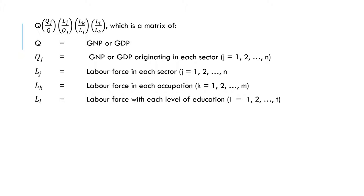Now let's look at the formula that goes with this method. This method sums up by multiplying the fractions of the GNP or GDP derived in the various sectors by the labor output coefficient, according to Akagbu (1982) and Blanc (1970). In the matrix formula, Q represents the GNP or GDP, and the next term represents GNP or GDP organized by each year or sector, where I equals 1, 2, depending on the sector.